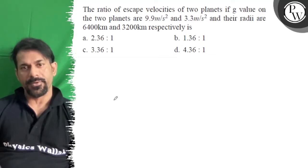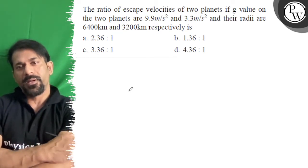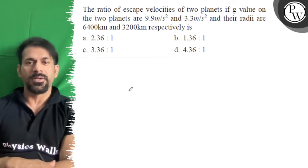Hello, let's see the question. The ratio of escape velocities of two planets if g value on the two planets are 9.9 and 3.3, and their radii are 6400 and 3200.